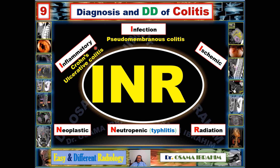The infectious cause includes pseudomembranous colitis, caused by the Clostridium difficile organism, which is a classic cause of colitis and thumb printing. The ischemic cause occurs at watershed areas — the junctions between the supply territories of the superior and inferior mesenteric arteries — appearing at the splenic flexure. If thumb printing is found at the splenic flexure, ischemic colitis should be considered and confirmed by other findings.